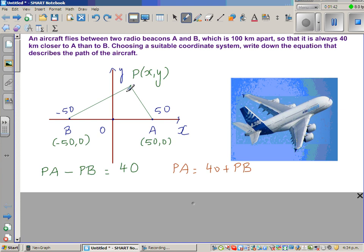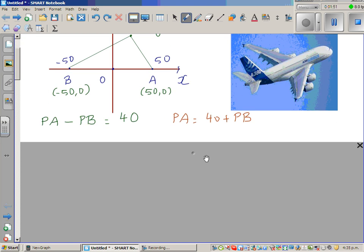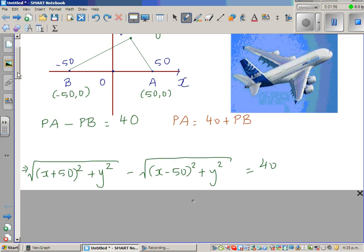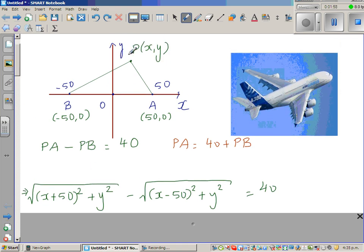Now what is PA? P is an arbitrary point. Using the distance formula, we can write PA as √[(x+50)² + y²] minus PB which is √[(x-50)² + y²] equals 40.